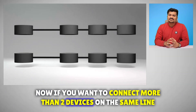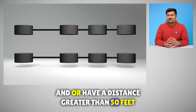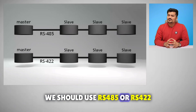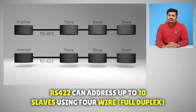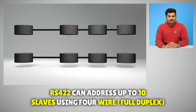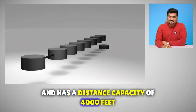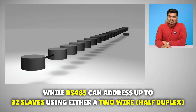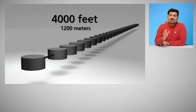If you want to connect more than two devices on the same line, or have a distance greater than 50 feet, you should use RS-485 or RS-422. RS-422 can address up to 10 slaves using four-wire full duplex and has a distance capacity of 4,000 feet, while RS-485 can address up to 32 slaves using either two-wire half duplex or four-wire full duplex.